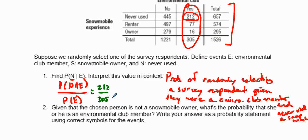An easier way is 212 divided by 305. This works because if you have 212 over 1526 divided by 305 over 1526, this factors and turns into that value. Put in your calculator, it equals about 0.695.